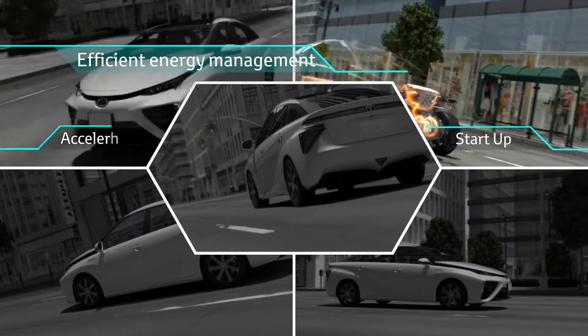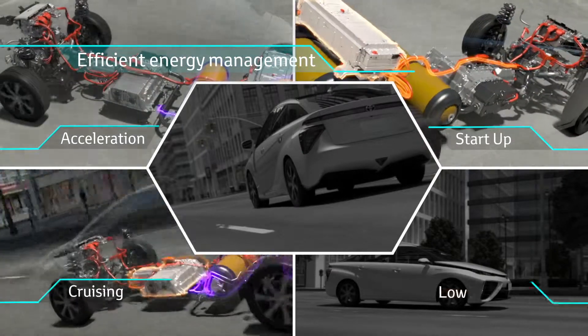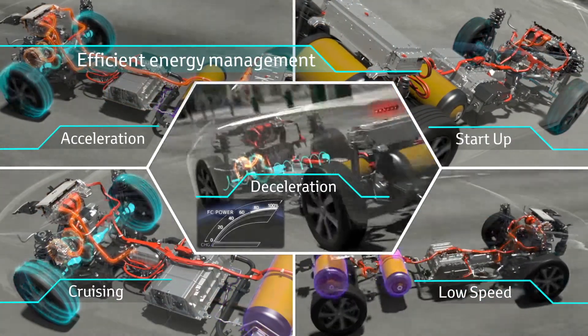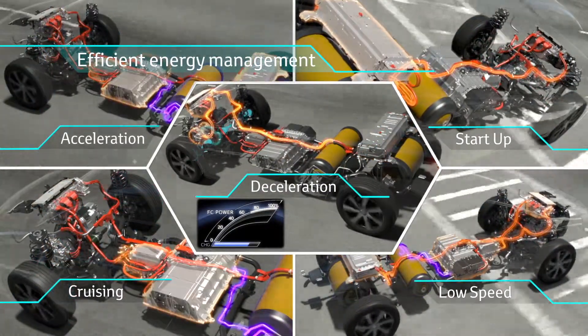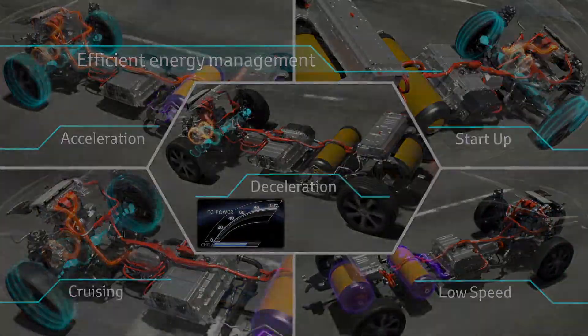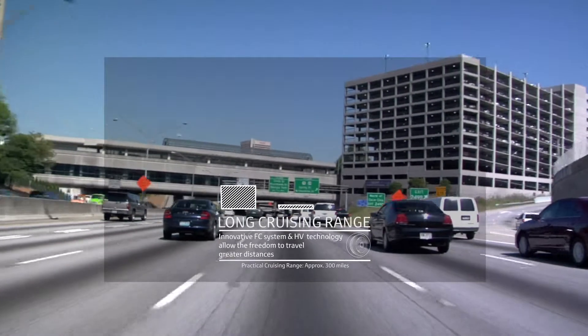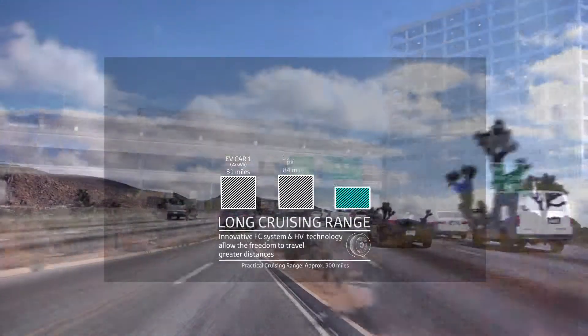FCV controls the electricity created by the fuel cell using technology developed from the hybrid vehicle. The motor works as a generator, gathering energy when the car speed is low. This accumulated energy is stored in the battery to support the fuel cell when accelerating.